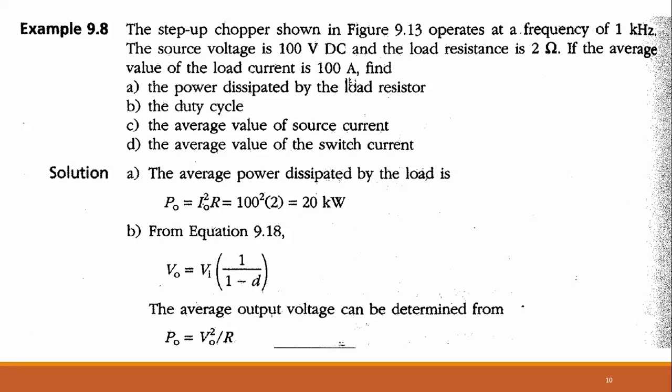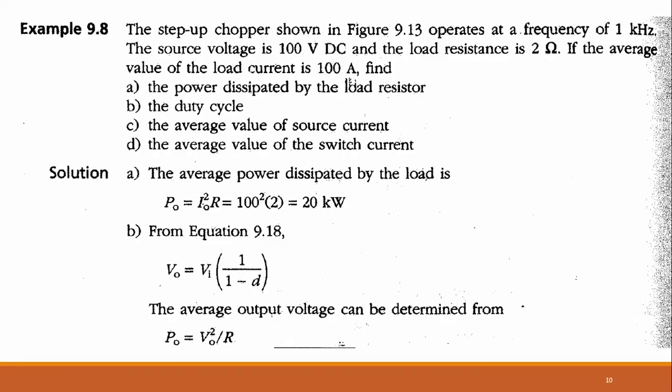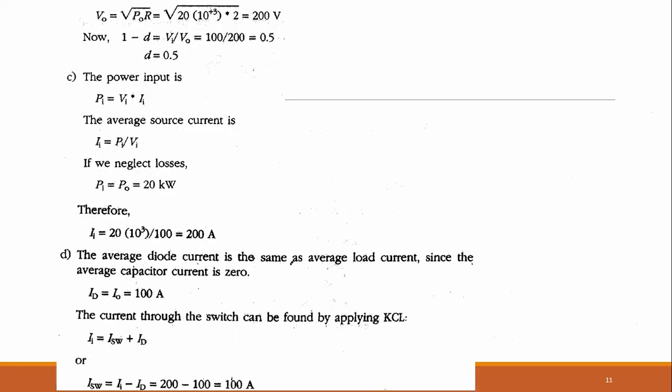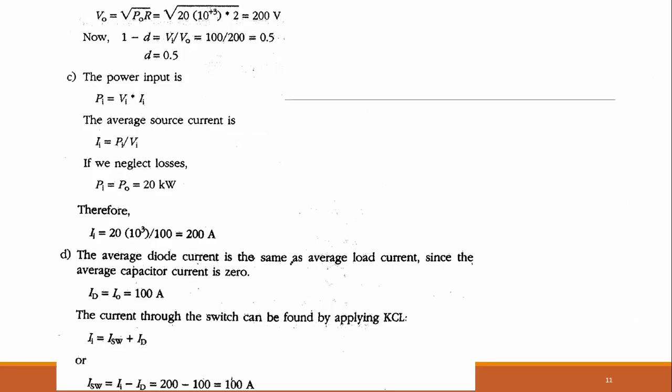For the boost converter, V_out equals V_in divided by (1 − D). From output power P equals V_out² / R: 20,000 = V_out² / 2, so V_out = 200 volts. Since V_out = 200 volts and V_in = 100 volts, we get D = 1 − (V_in/V_out) = 1 − 0.5 = 0.5.